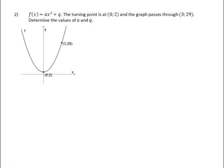Determine the values of a and q. The q value is given by the turning point at (0, 2). That means we moved our graph 2 units up. So f(x) equals ax squared plus 2.